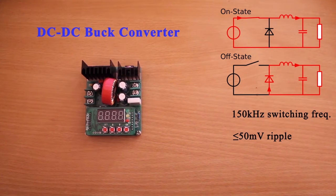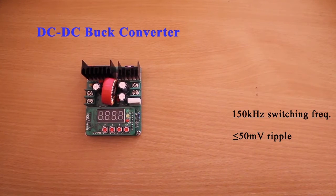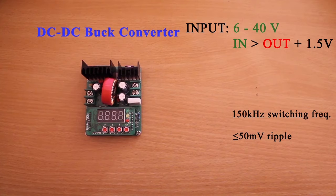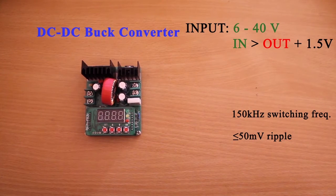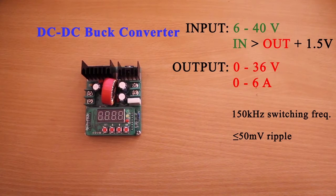The input voltage range is 6 to 40V and it needs to be at least 1.5V above the desired output. The output voltage range is 0 to 36V and the output current range is 0 to 6A, but for over 5A you may need additional cooling.